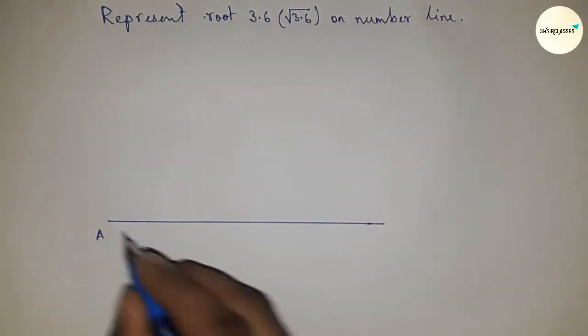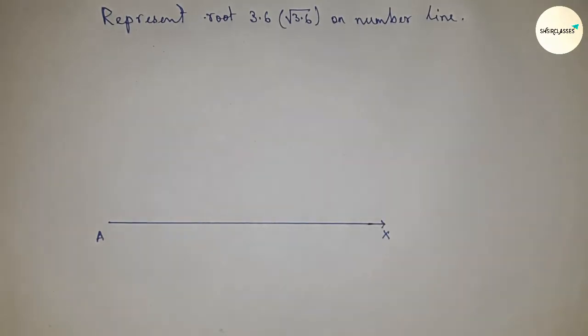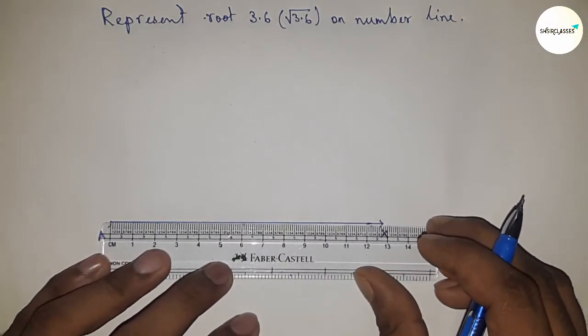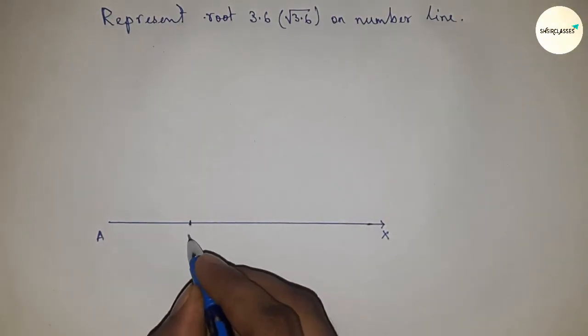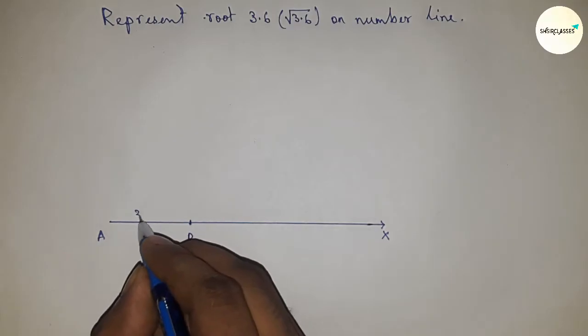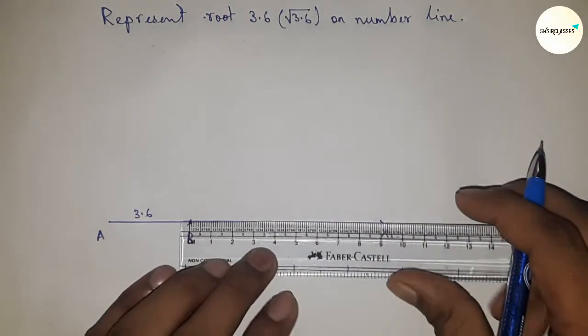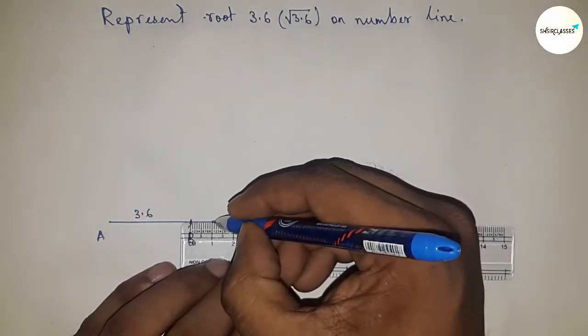This is the x-axis line. Next, take a distance or length of 3.6 centimeters. This is 3.6 centimeters, and this is point B. So AB equals 3.6 centimeters.